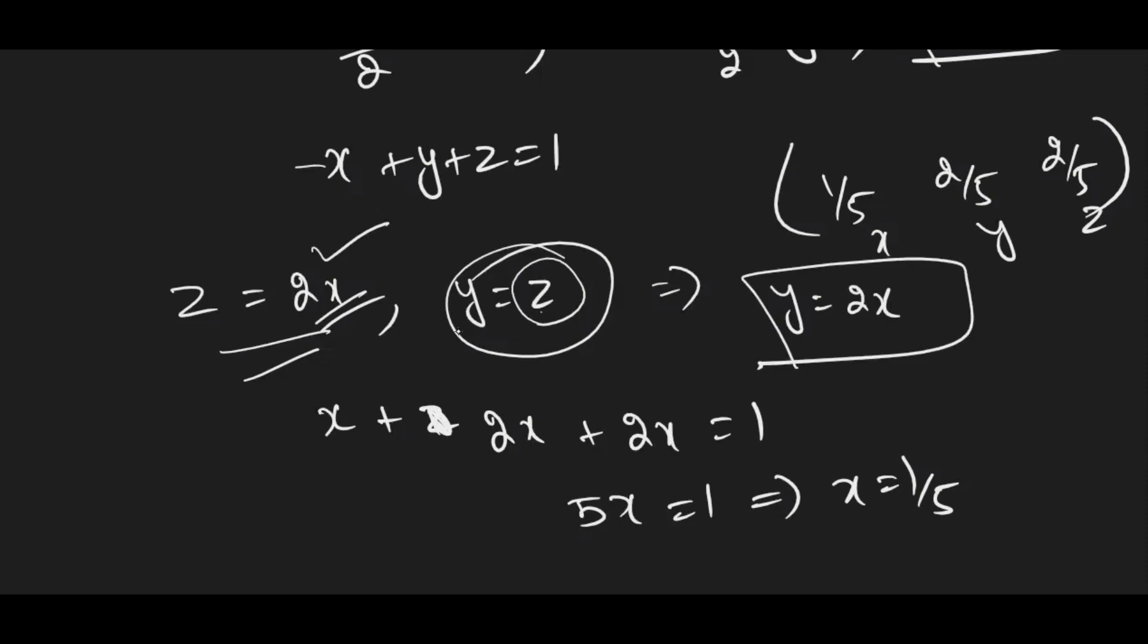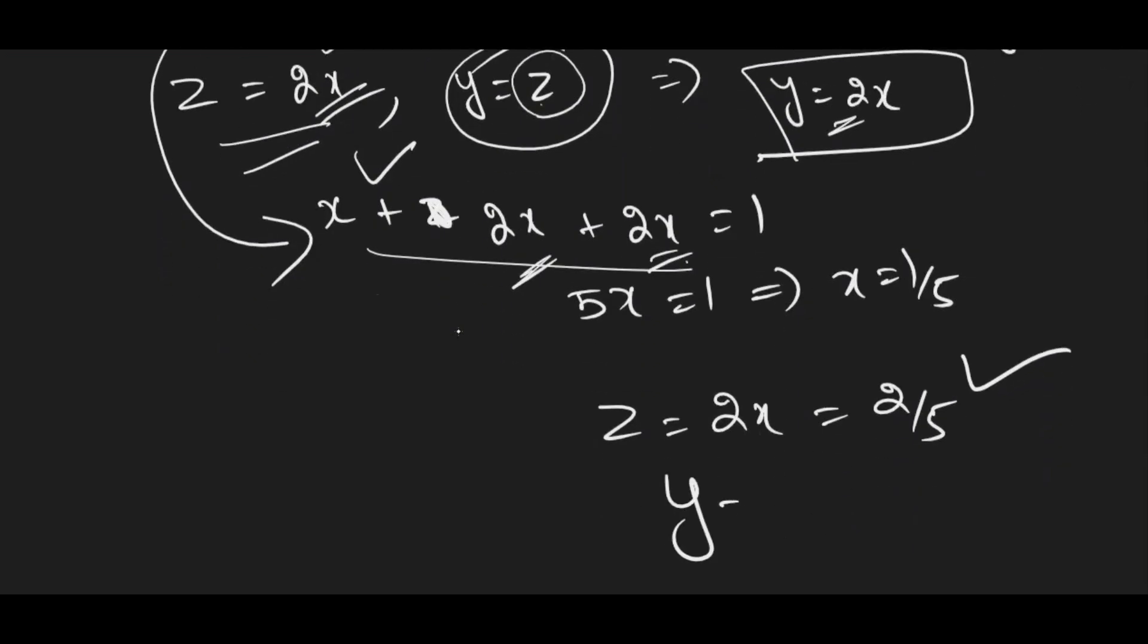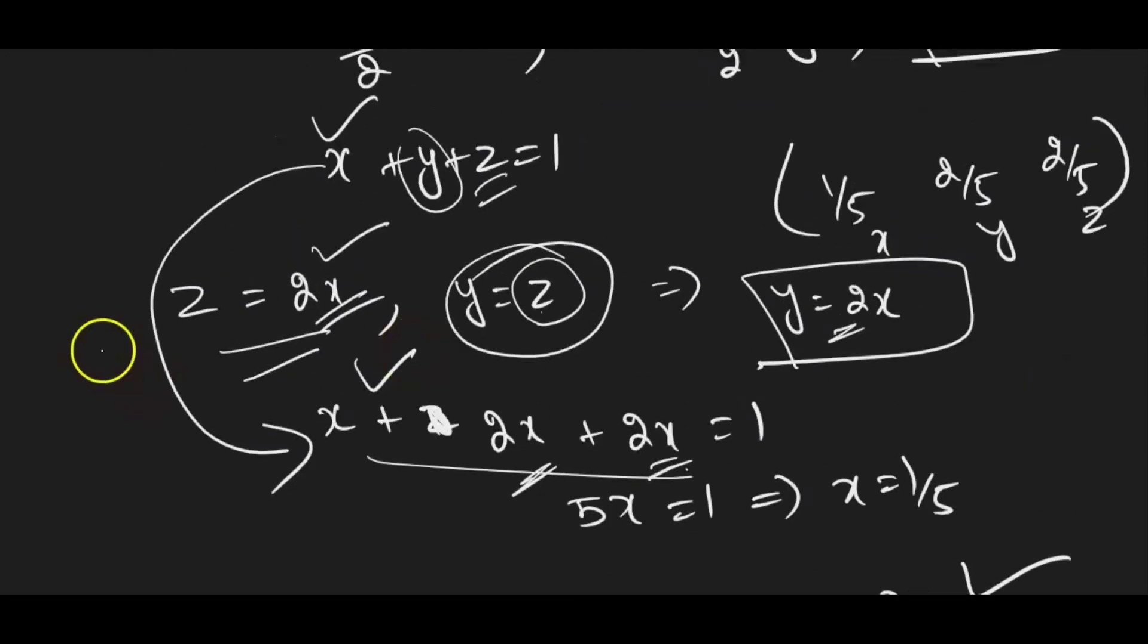Now what is your equation? This I am replacing. x, I am writing as it is. In the place of y, I am writing this substitution 2x in the place of z, I am substituting 2x. So I add all these things, 2+2+1, 5x = 1, x = 1/5. So once you got x, then what is z? z is 2x, that is 2/5. So I got z as 2/5 and y is same as z which implies y is also 2/5. So as I told you, your answer is 1/5, 2/5 and 2/5.